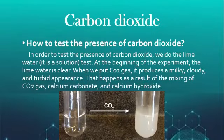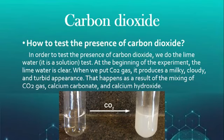Carbon dioxide. How do we test the presence of carbon dioxide? In order to test it, we do the lime water test. Lime water is a solution. At the beginning of the experiment, the lime water is clear, as we can see in the first tube. When we put CO2 gas — which is carbon dioxide — it produces a milky, cloudy, and turbid appearance. That happens as a result of the mixing of carbon dioxide gas, calcium carbonate, and calcium hydroxide, as we can see in the figure to the right.